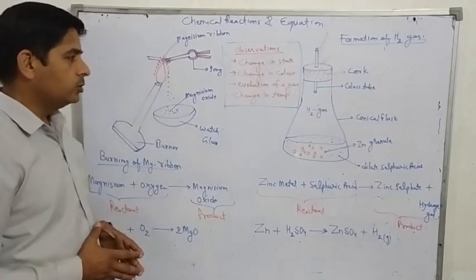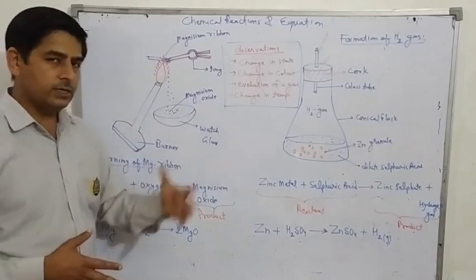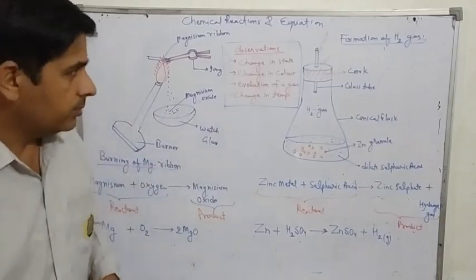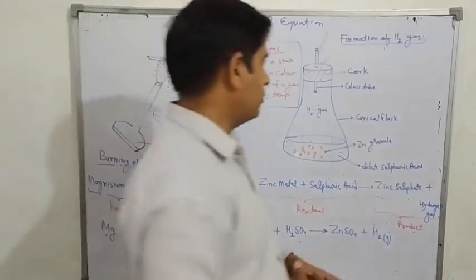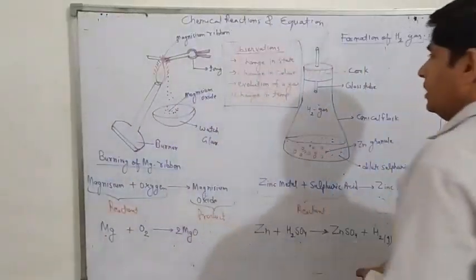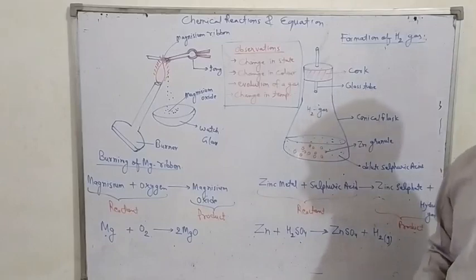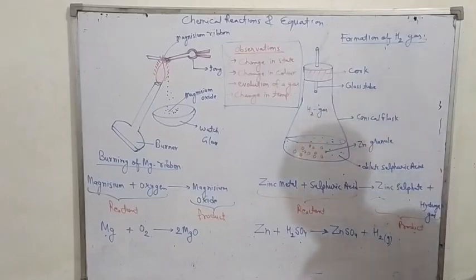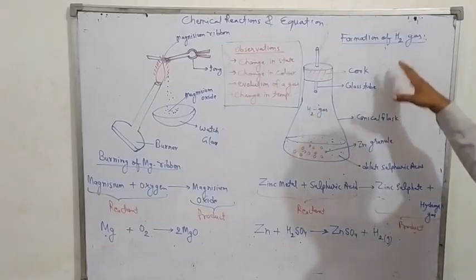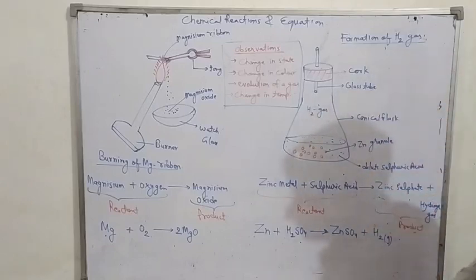The other example is the formation of hydrogen gas by the reaction of zinc with sulfuric acid. When we react zinc with sulfuric acid, hydrogen gas is produced.